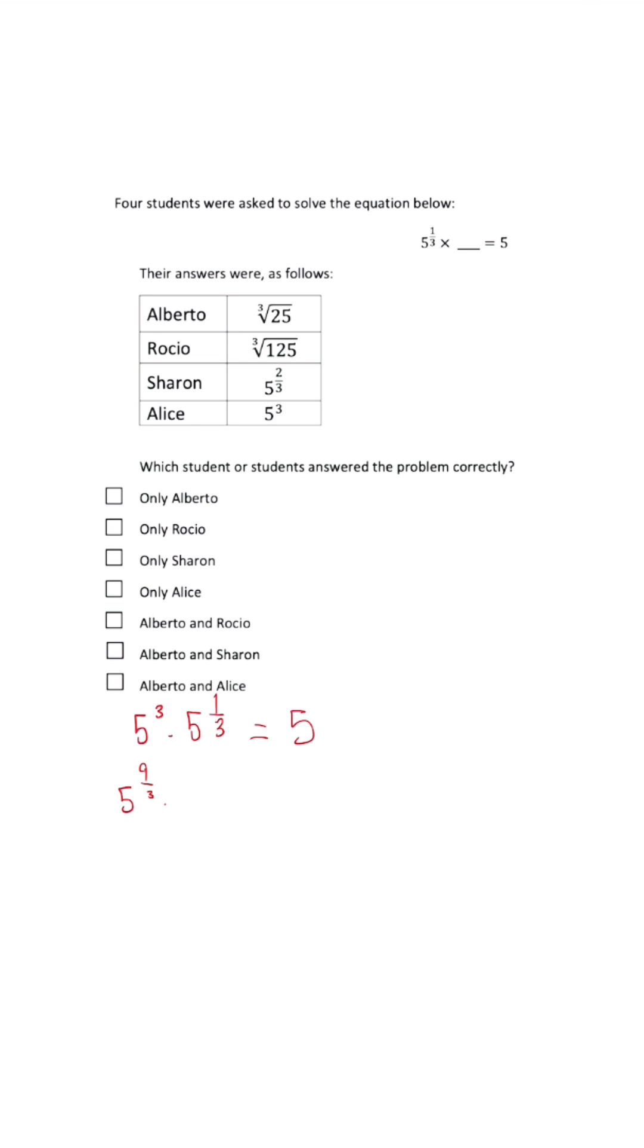this would be 5 to the 9 over 3 power times 5 to the 1/3 power. When we simplify and get 10 over 3, this is not equal to 5. So that's incorrect.